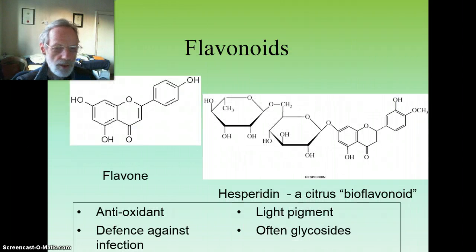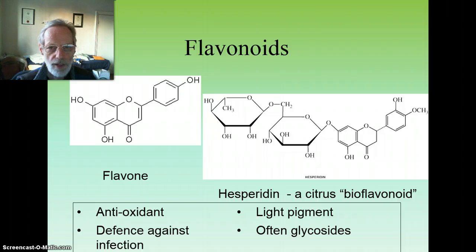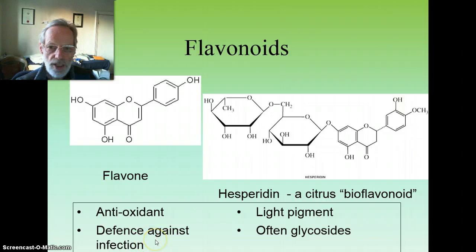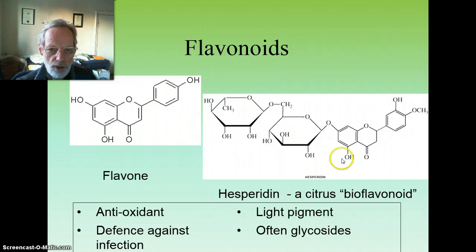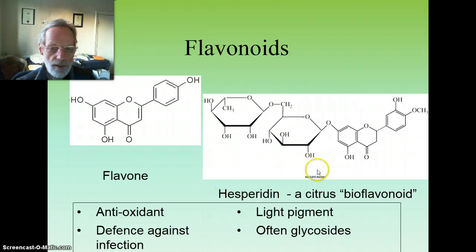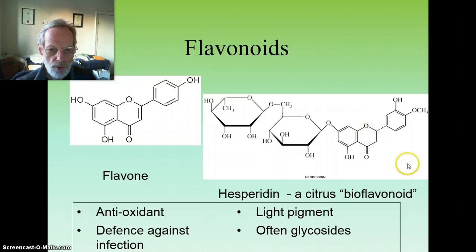Flavonoids are a very important phenolic group of compounds for phytochemists and herbalists. In the plant, they are antioxidants, they defend against infection, and they're involved in photosynthesis. They may occur as flavonoid glycosides — like the citrus bioflavonoid hesperidin — with sugars attached, making them more water-soluble.